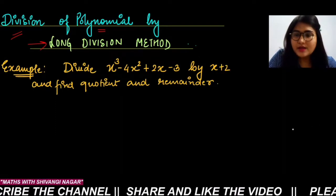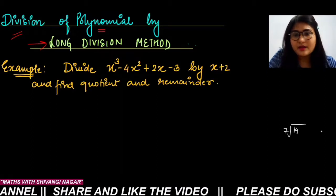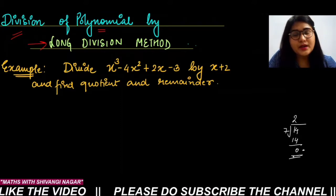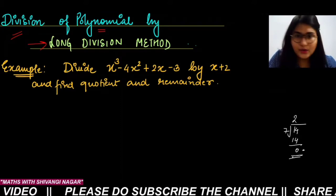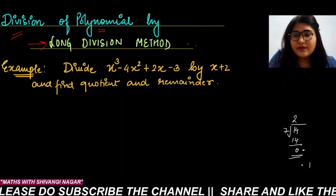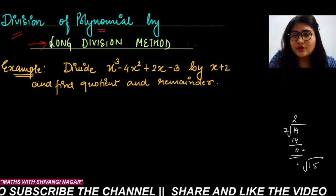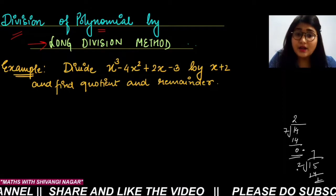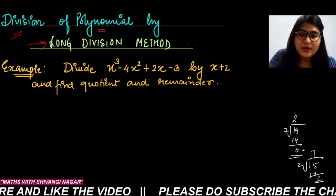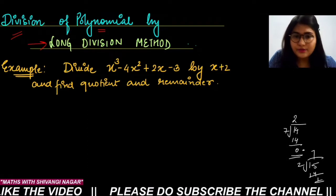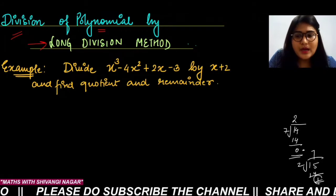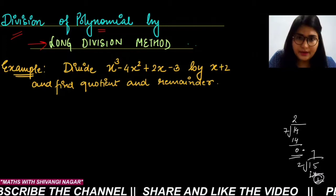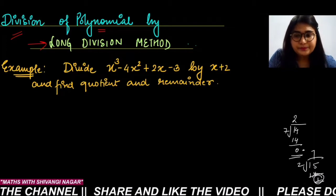Suppose I give you a task to divide 14 by 7, so 7 times 2 is 14, remainder 0. After remainder 0, you stop. Similarly, if I give you a task to divide 15 by 2, so 2 times 7 is 14, remainder is 1. If you have to give the answer in decimal form you will continue, but if not, you say 7 times and 1 is the remainder.